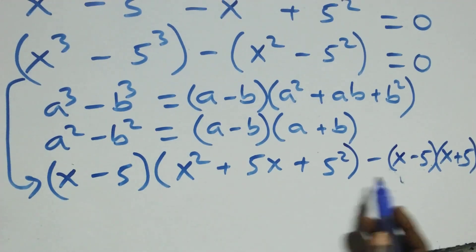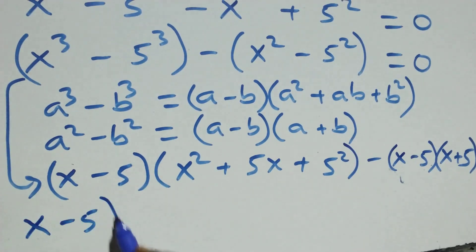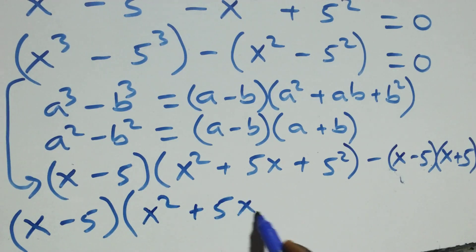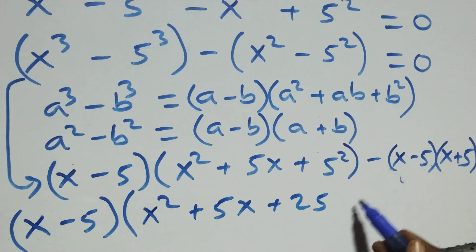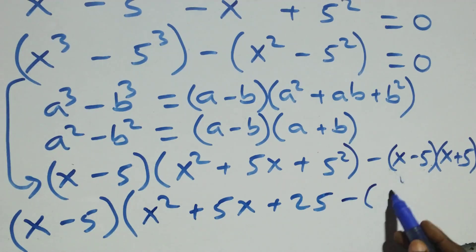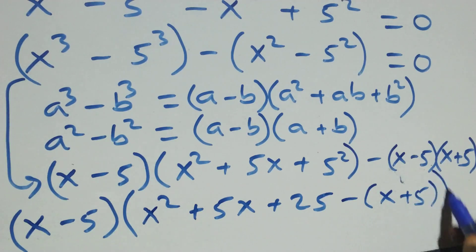We factor out (x minus 5), so we have (x minus 5) times open bracket x square plus 5x plus 25 minus (x plus 5) close bracket, equals to 0.